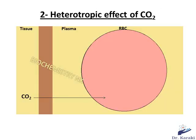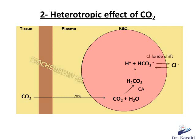The second heterotropic allosteric effector is carbon dioxide. CO2 is an important end product of oxidative metabolism. In fact, 70% of CO2 released from peripheral tissues is hydrated by carbonic anhydrase to carbonic acid. This weak acid dissociates partially to H+ and HCO3⁻. The bicarbonate ion produced moves to plasma in exchange for chloride ion to maintain electrical neutrality — known as the chloride shift — while the generated H+ binds to hemoglobin, stabilizing the T state and promoting the release of oxygen to tissues.